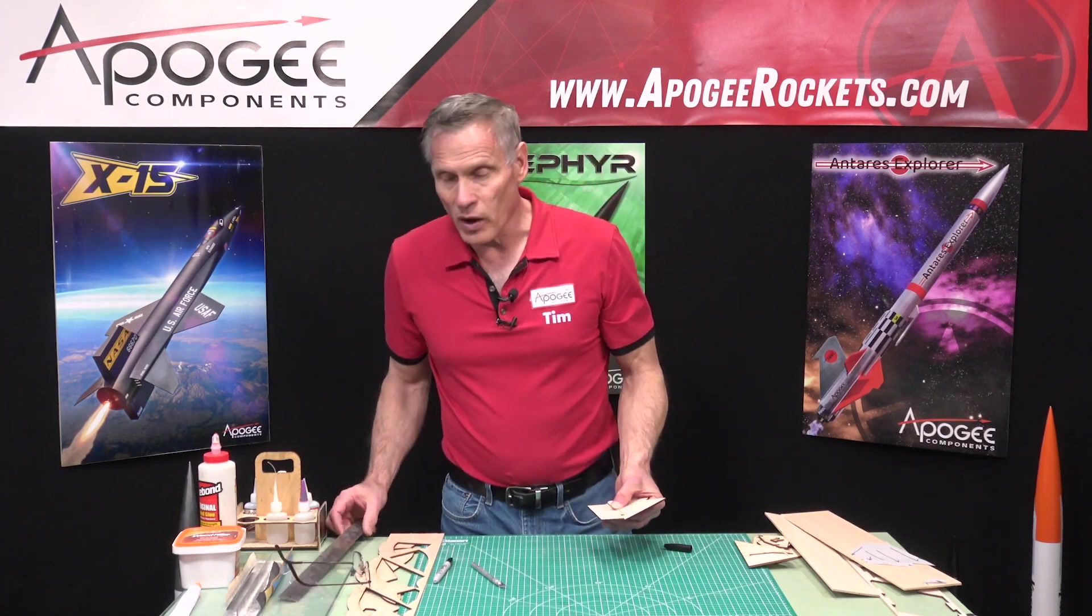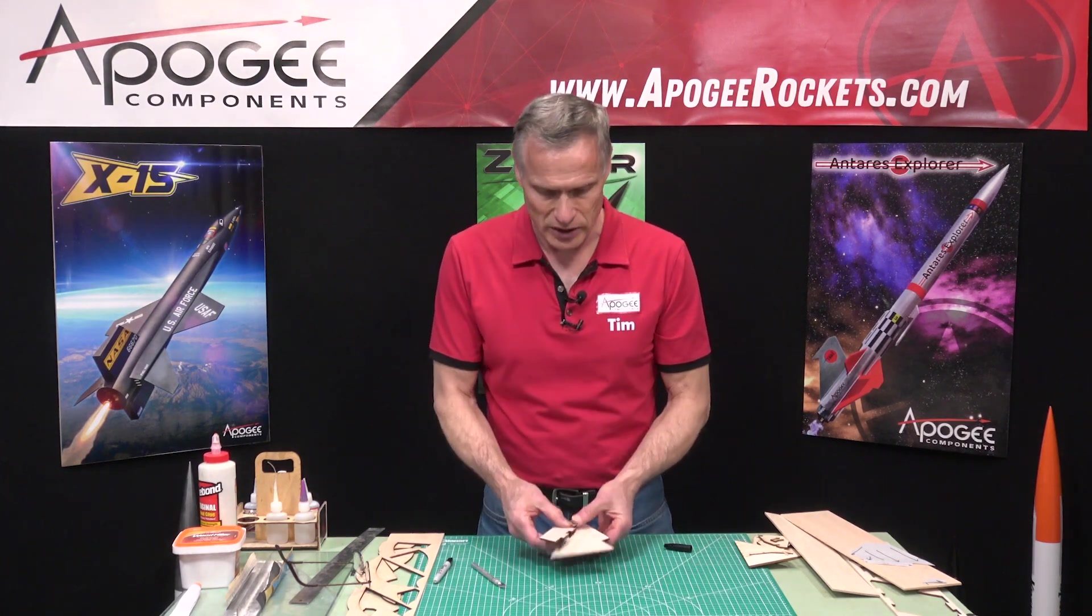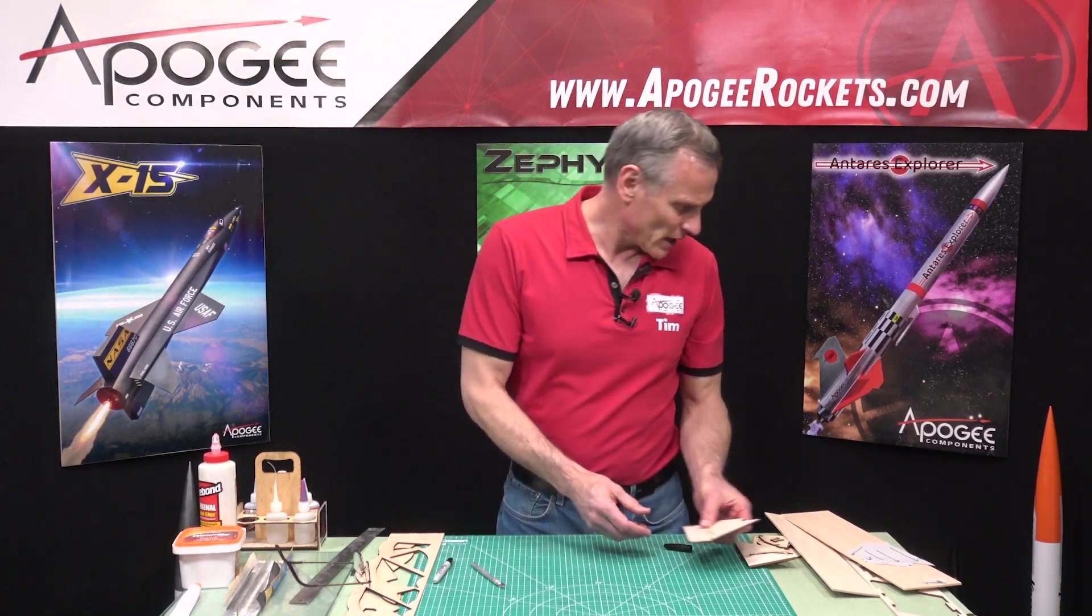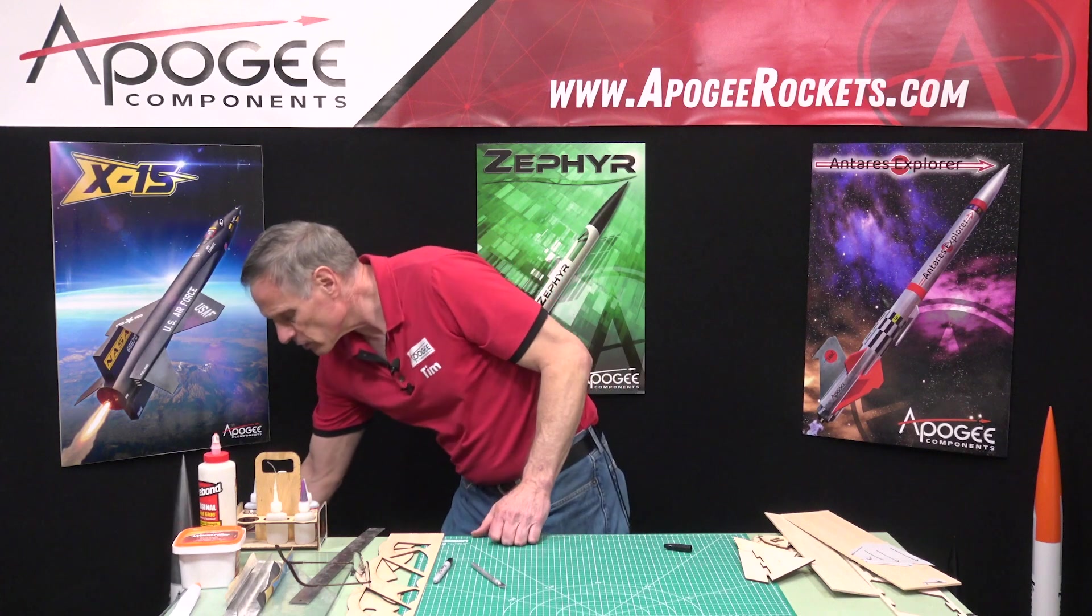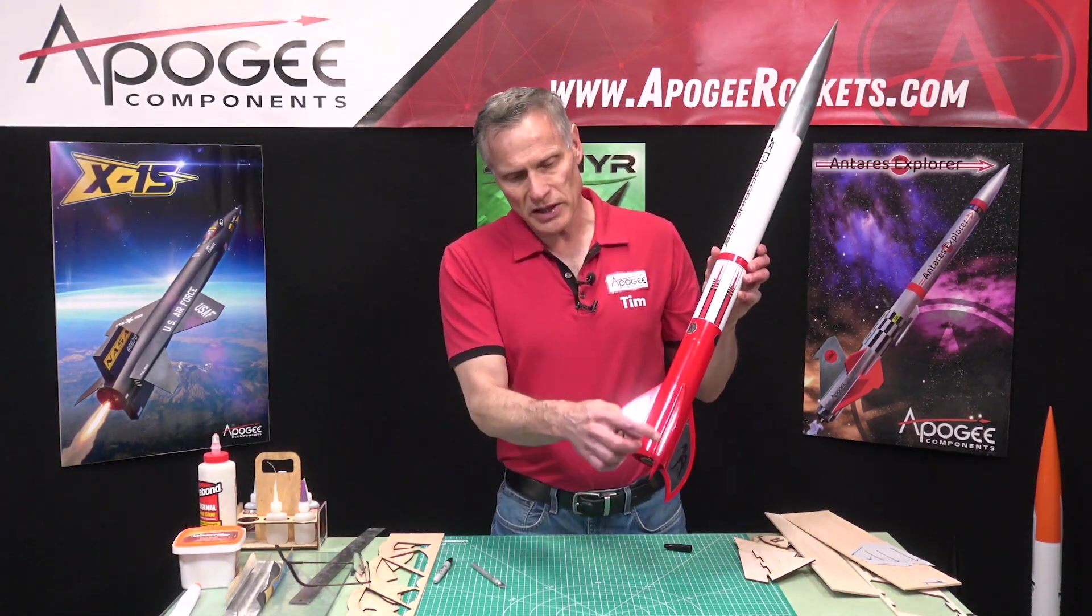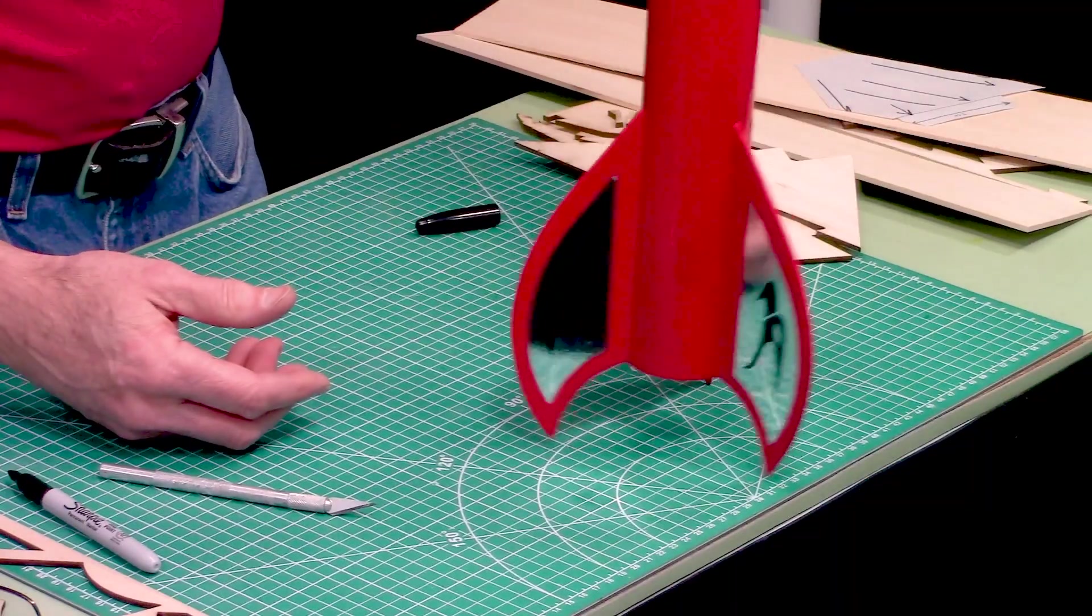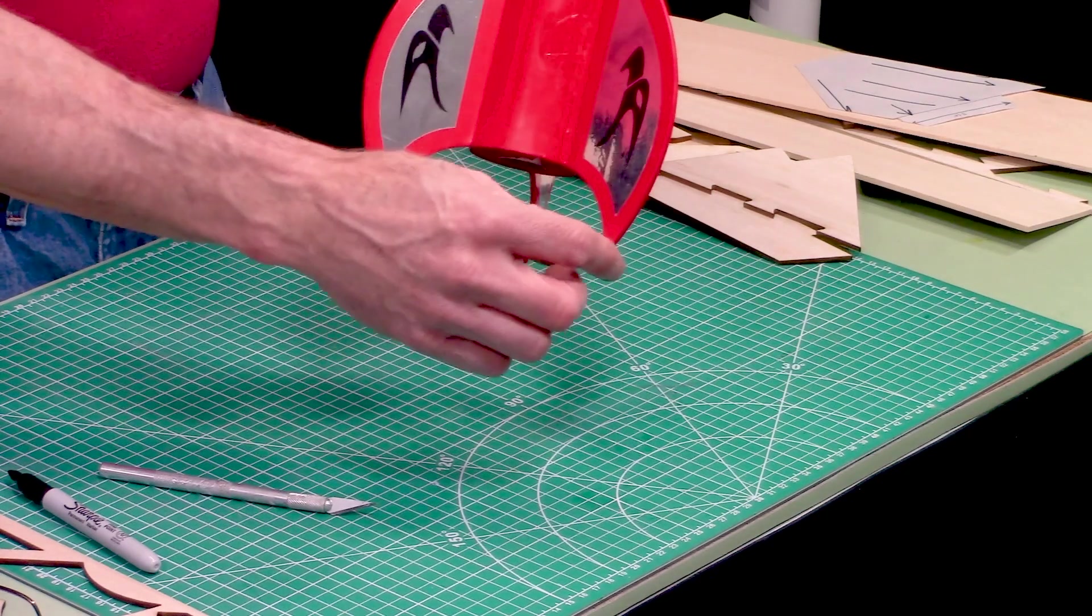The other reason why is for strength. Some rockets like this one here, this is the Peregrine Jr. You can see that the fins hang off the bottom of the tube. And when the rocket hits the ground, these tips, that's the most likely piece that's going to land first.